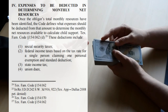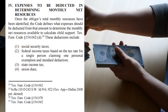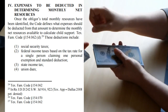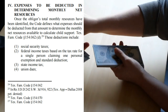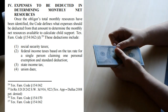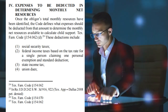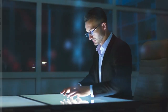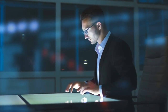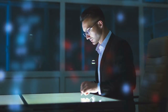Certain expenses are deducted in determining monthly net resources. For the W-2 obligor that is the easiest calculation to make. Once you determine the monthly resources, the obligor is entitled to deductions including: social security taxes, federal income taxes based on the tax rate for a single person claiming one personal exemption and standard deduction, state income tax, union dues, expenses for health insurance or cash medical support of the obligor's child ordered by the court, and if the obligor does not pay social security taxes, non-discretionary retirement plan contributions — this is usually railroad workers and sometimes teachers.